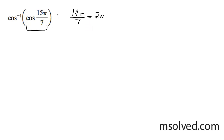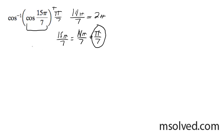So that means this is one circle, or one rotation around, plus π over 7. So that means we're going to be focused on this here. That means that this inside here, whatever we get, we're going to go one full rotation around and then we'll go to π over 7.